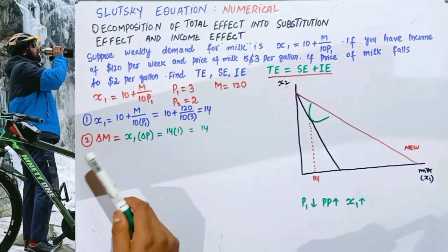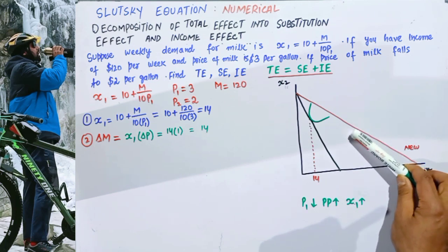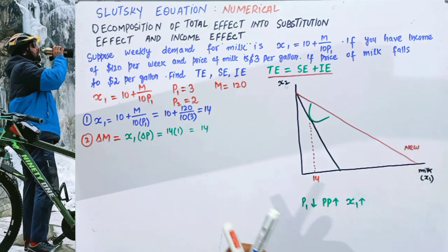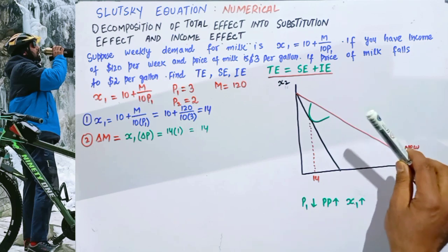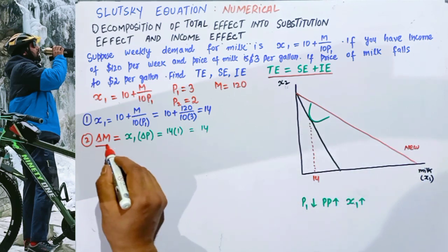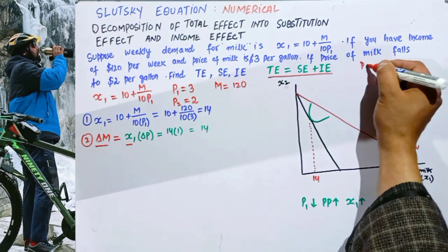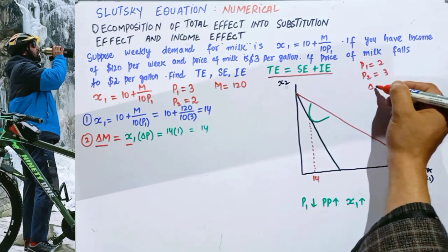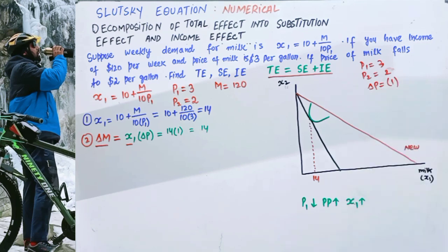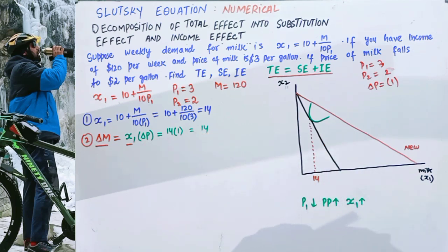The next step is to find the change in income — how much money we need to take away from the consumer so that real income remains the same and the initial bundle is just affordable. The change in income equals x1 (initial bundle) times the change in price. The change in price is |$2 − $3| = $1, so the change in income is 14 × 1 = $14. We need to take away $14 from the consumer.